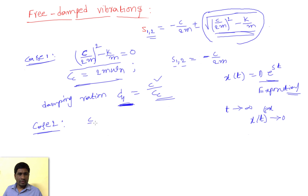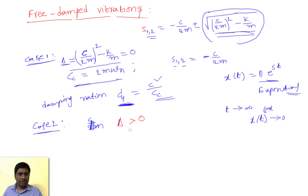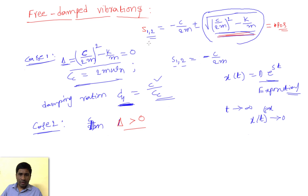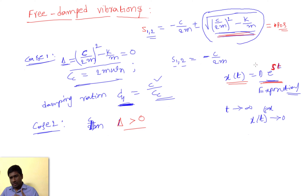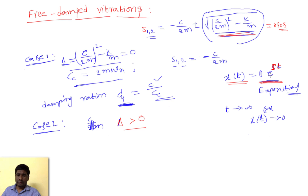In Case 2, let δ = c/2m. When δ > 0 — meaning the discriminant is positive — the square root yields two real values, giving two distinct roots s₁ and s₂. One root may be negative and one positive, or both could be negative, depending on the values.